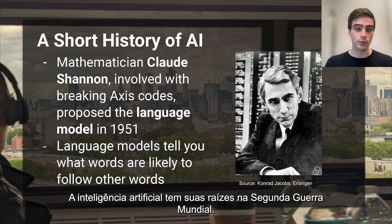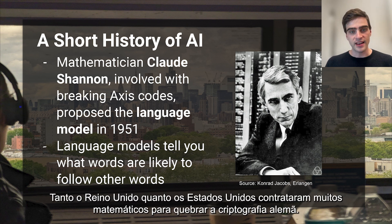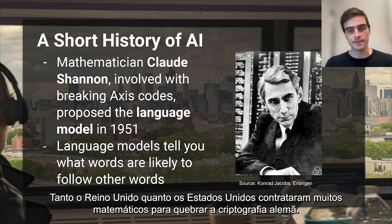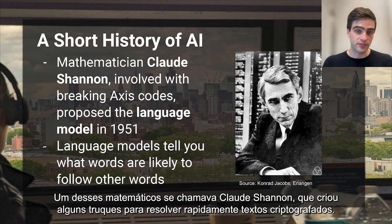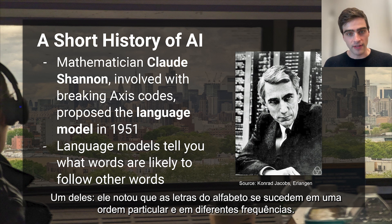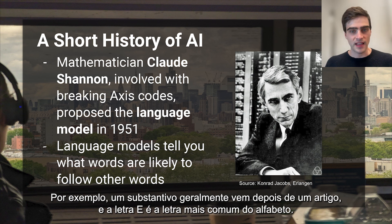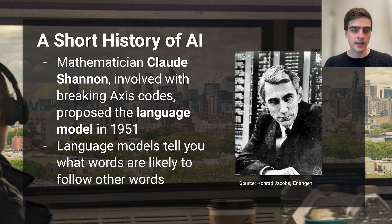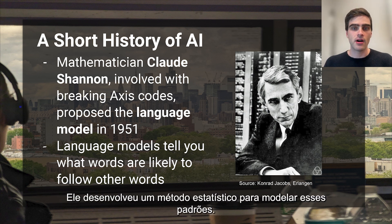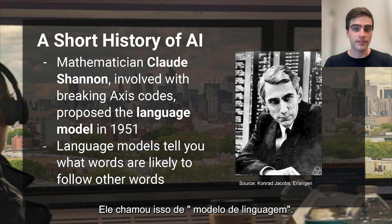Artificial intelligence has its roots in World War II. The United Kingdom and the United States both hired many mathematicians to break into German encryption. One of these mathematicians was named Claude Shannon, who noted a few tricks for quickly solving encrypted texts. Namely, he noticed letters of the alphabet follow one another in a particular order and in different frequencies. For example, a noun usually follows an article and the letter E is the most common letter of the alphabet. He developed a statistical method for modeling these patterns.